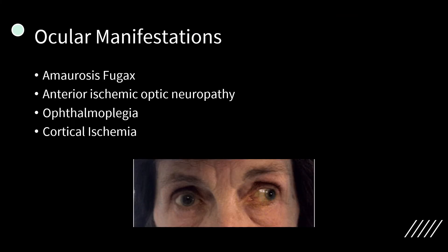Ocular manifestations of GCA include amaurosis fugax, the transient loss of vision in one or both eyes usually lasting less than five minutes, and anterior ischemic optic neuropathy. Ophthalmoplegia is shown in this image where one eye is able to move but the other is static. Cortical ischemia is also seen.